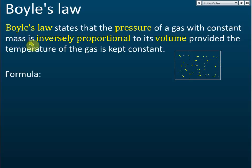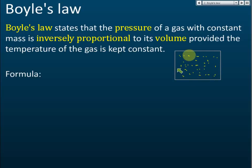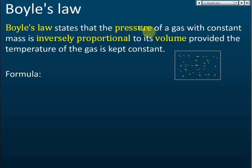For all the gas laws, the mass must be constant — it's a closed system, so the gas cannot come out and no other gas can go in. The amount of gas particles stays the same and the mass of the gas is constant. So Boyle's Law states that the pressure of a gas with constant mass is inversely proportional to its volume.